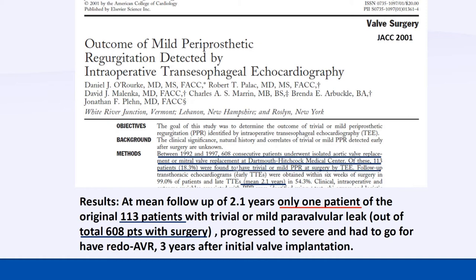This nice paper looks at the outcome of mild periprosthetic regurgitation detected by intraoperative TEE. They followed about 608 patients for two years. From these 608 patients in the OR, 113 of them had a paravalvular leak — trace to mild. From those 113 patients with a small paravalvular leak in the OR, only one patient went on to severe leak and needed valve replacement. So trace-to-mild paravalvular leak in the OR — just leave it. Nothing will happen. That's my first message.